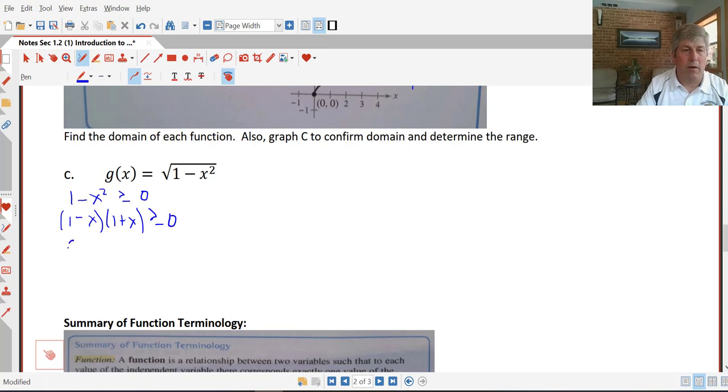So we've got critical points at plus or minus 1. So looking at that on our number line, we're going to have to do some testing here to figure out because we've got the three different regions. So we're going to have to figure out what works and what doesn't. So testing like a negative 10, if I put negative 10 in here, well, I still get the square root of a negative number.